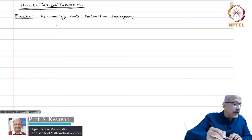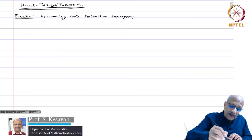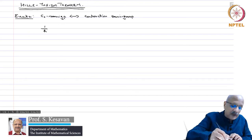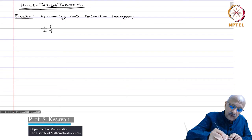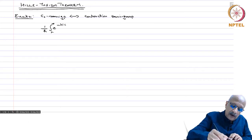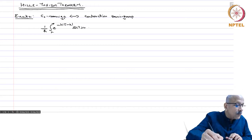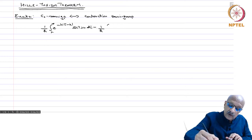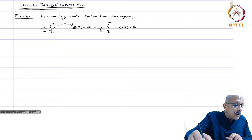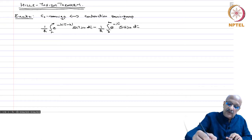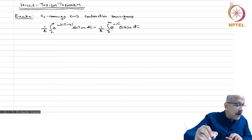In the course of the proof, when trying to prove that R_λ u is in D(A), I had the expression: integral from h to infinity of e^{-λτ} times (1/h) S(τ-h) u dτ minus (1/h) integral from 0 to infinity of S(τ) u dτ. The e^{-λτ} factor is missing — please add that.